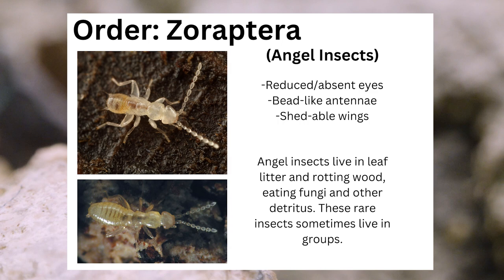The order Zoraptera, also called angel insects, can be identified through their reduced or absent eyes, their bead-like antennae, and their sheddable wings. Angel insects live in leaf litter and rotting wood, eating fungi and other detritus. These rare insects sometimes live in groups.